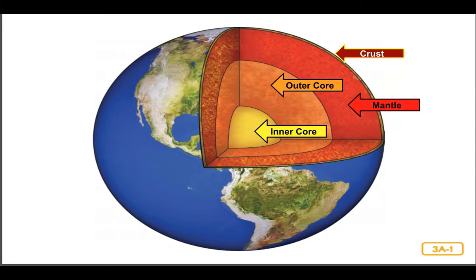Heat closer to the core causes the rock inside the mantle to move around quite a bit. But in most places, it is still solid rather than liquid. Did you hear the word heat again? Heat causes parts of the mantle to move around. Remember, something that is solid keeps its shape, while something that is liquid can move around and take the shape of whatever it is in.